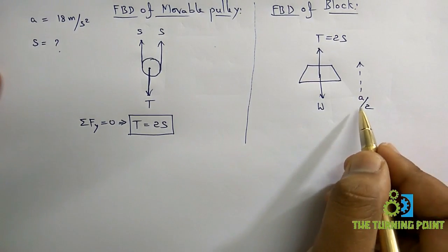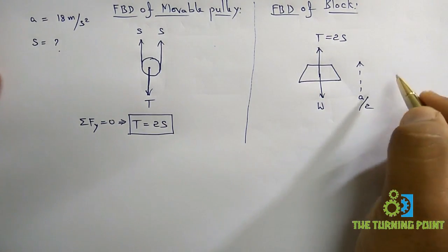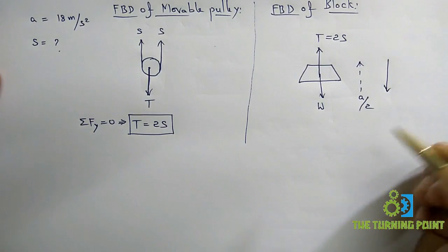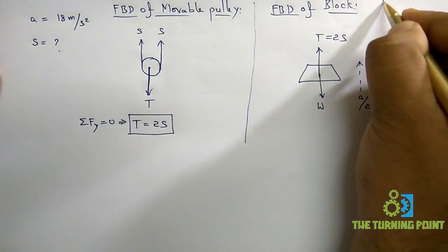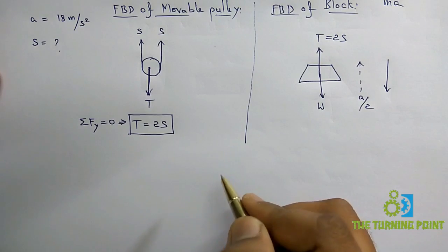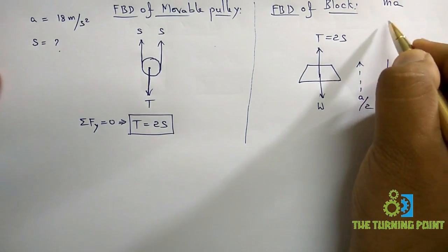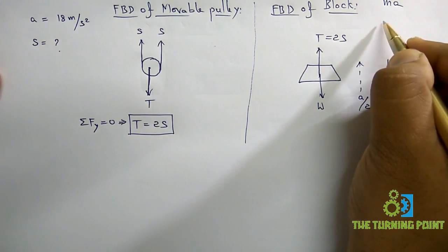If it is having an acceleration of a by 2 in the upward direction, in the opposite direction you will be having inertia force. Inertia force is nothing but MA. F equals MA is the inertia force. Instead of MA I can write W by g into a.